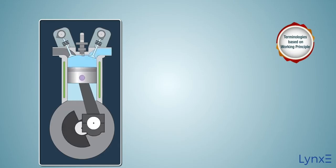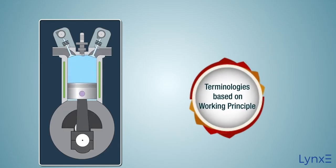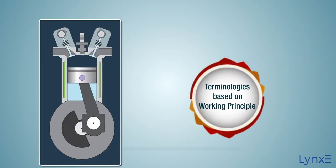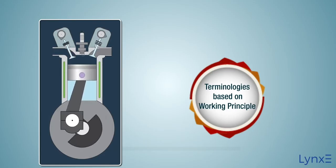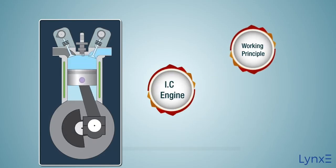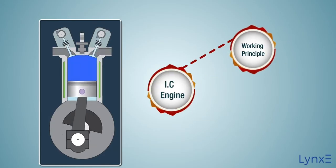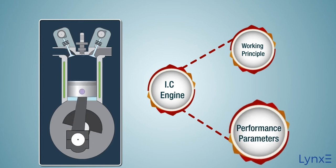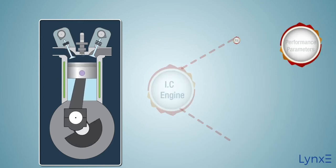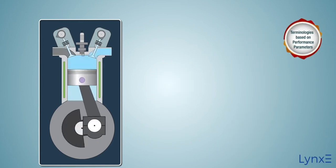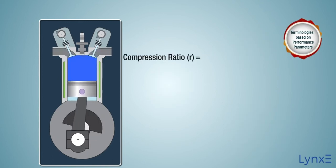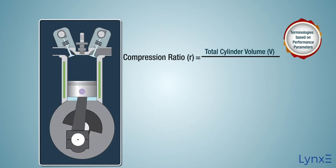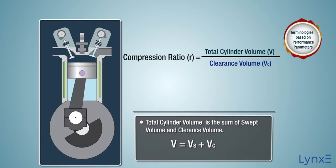These are the terminologies based on the working features of the IC engine. Now let's understand terminologies of IC engines based on the performance parameters. Compression ratio is the ratio of total cylinder volume to the clearance volume.